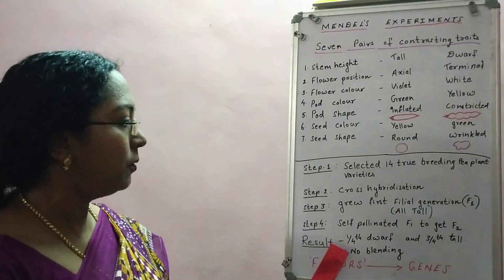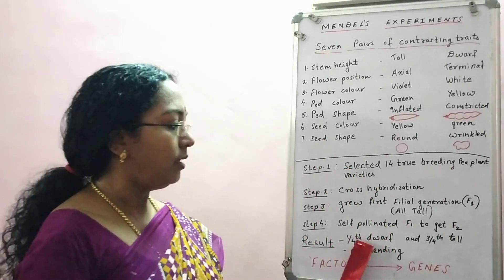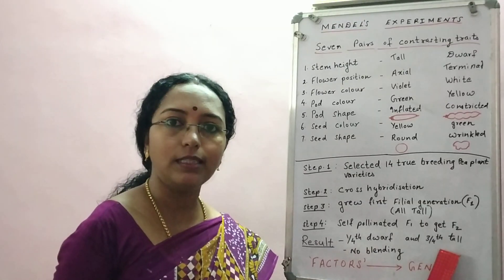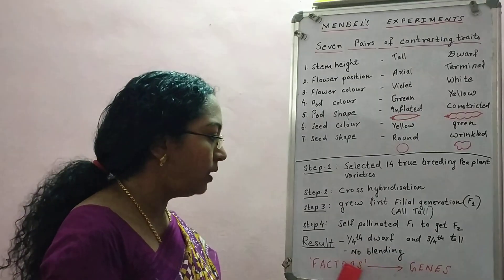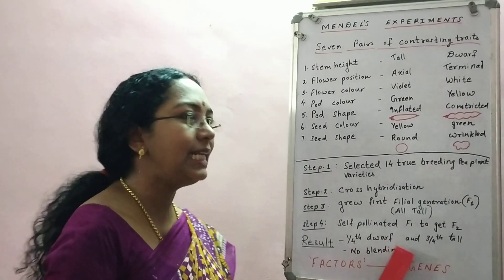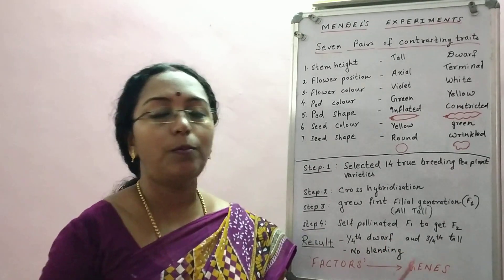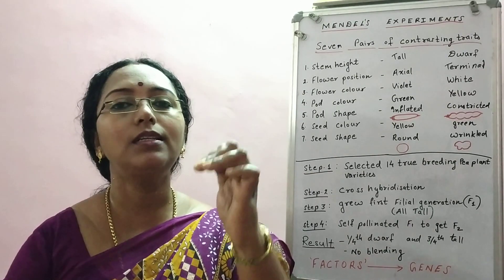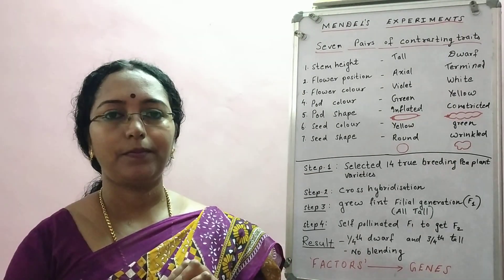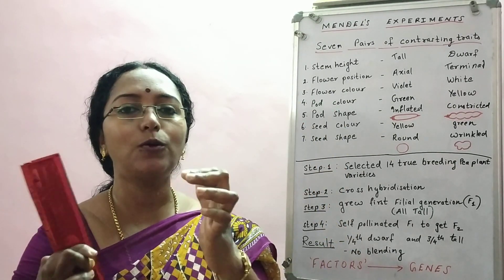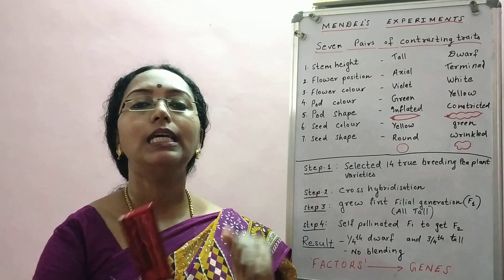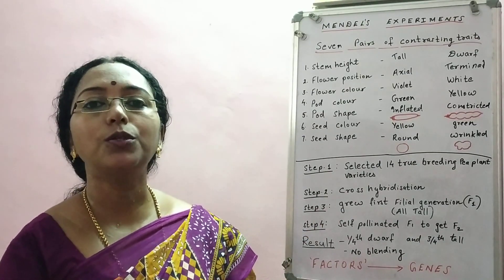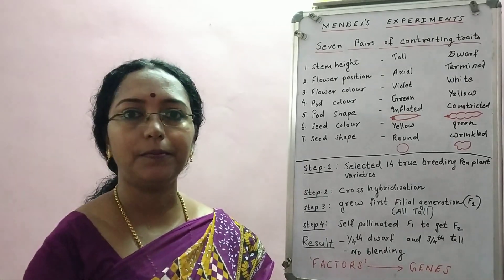One more important point: one-fourth were dwarf and three-fourths were tall, but there was no blending of characters. No blending means there were no plants having intermediate height — neither tall nor dwarf, just in between. There were no plants of intermediate height. This was another crucial observation of Gregor Mendel.